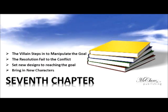Seventh chapter: the villain comes in to manipulate the goal. The resolution to the conflict fails. A new design for reaching the goal is accomplished. Additional characters are introduced to help reach the goal.